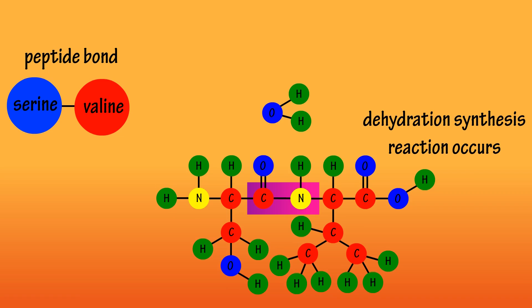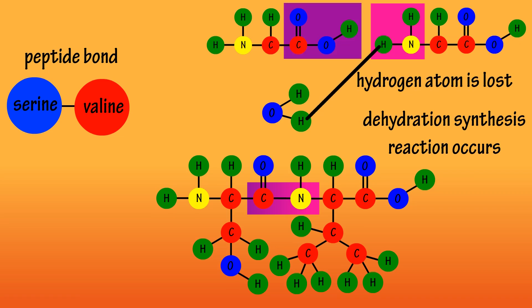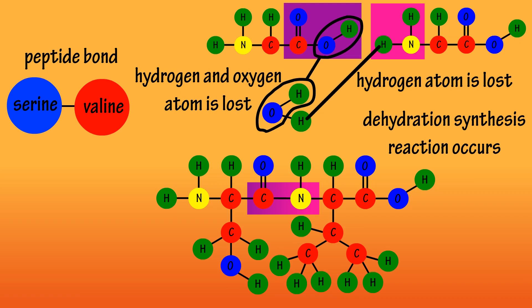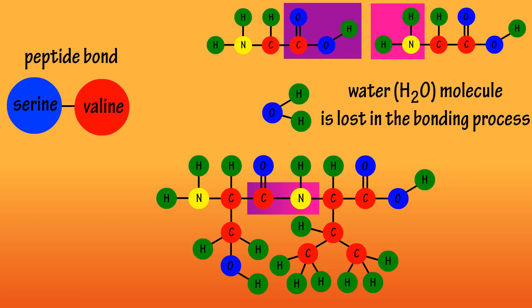This is done through a dehydration synthesis reaction as the amino group involved in the bond loses a hydrogen atom and the carboxyl group involved in the bond loses an oxygen and hydrogen. So the peptide bonding results in the release of a water H2O molecule.